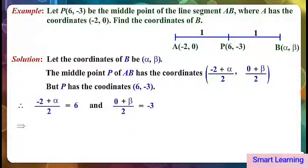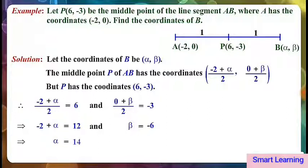This implies minus 2 plus alpha is equal to 12, and beta is equal to minus 6. This implies alpha is equal to 14 and beta is equal to minus 6. So the coordinates of B are 14 comma minus 6.